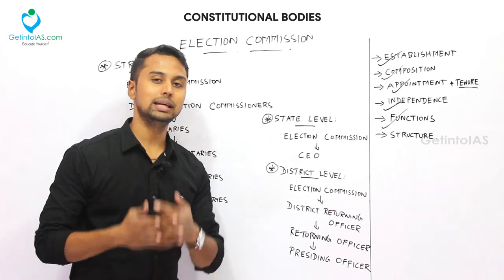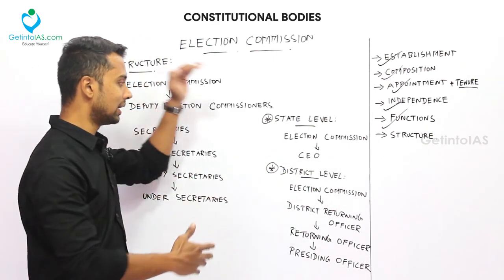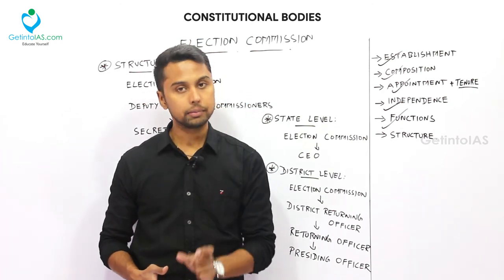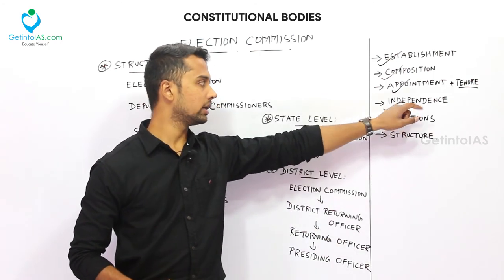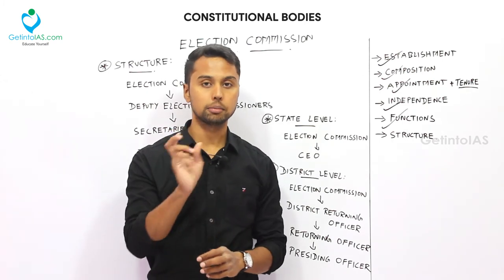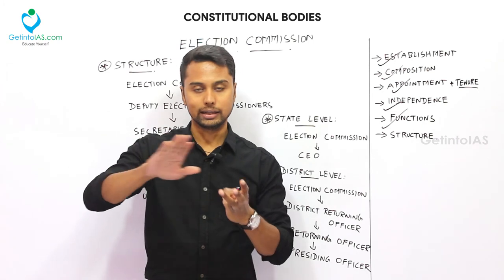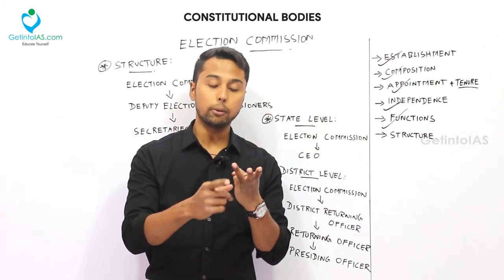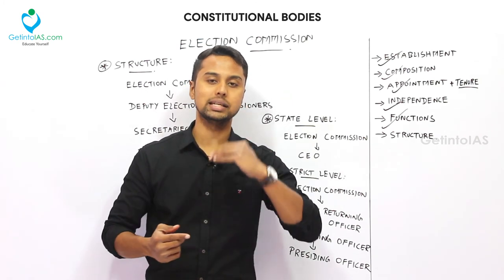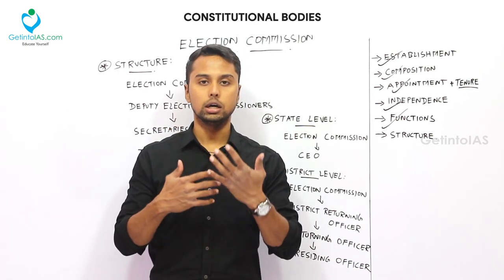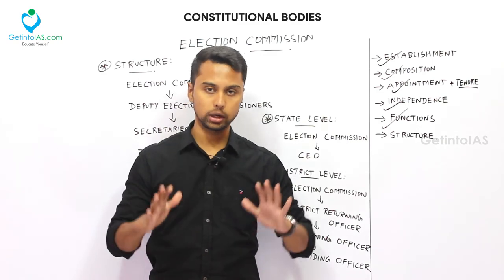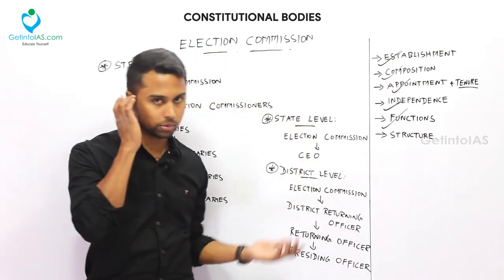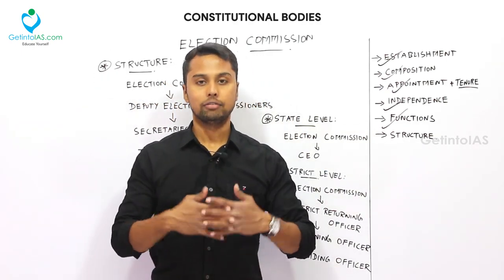This hierarchy is very important as UPSC has asked multiple questions about it. To summarize, the Election Commission is a permanent and independent all-India body to conduct free and fair elections. It is a multi-member body consisting of one Chief Election Commissioner and two other Election Commissioners, all with equal privileges, salary, and allowances. The only distinction is that while appointing the two other commissioners, the Chief Election Commissioner acts as chairman. Tenure is six years or 65 years of age, whichever is earlier.